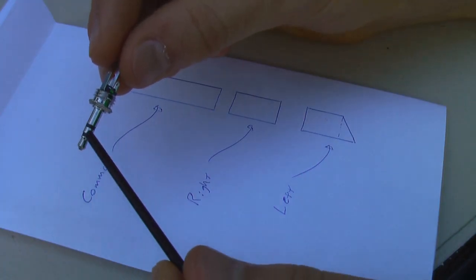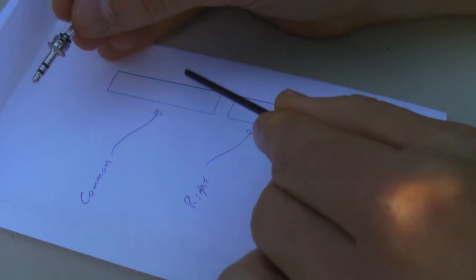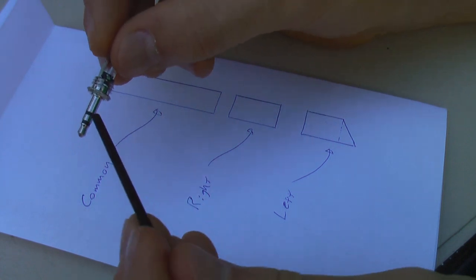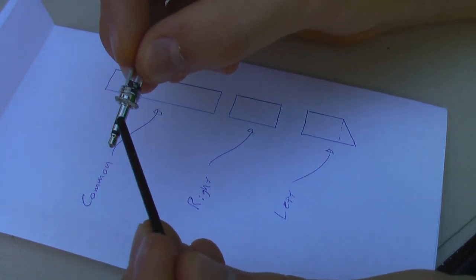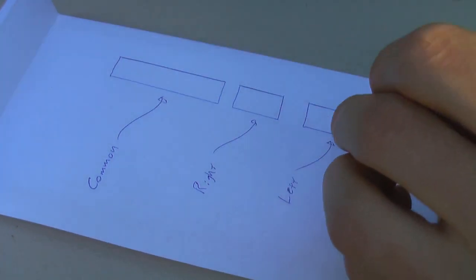On a 3.5mm headphone jack there are three metal bands here. The top one, the largest one, is the common and it goes to both the right and left speaker of your headphones. The middle one is the right-hand band, it only goes to the right-hand speaker. And the bottom one is the left-hand band, it only goes to the left-hand speaker.